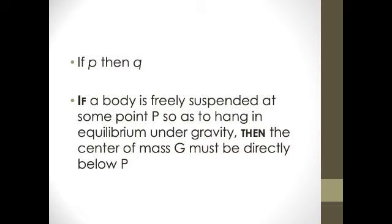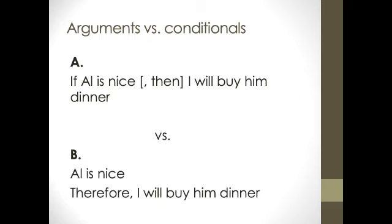So it is a statement, a single statement, even if a complicated one. So the structure of this, if a body is freely suspended at some point P so as to hang in equilibrium under gravity, then this is the second part, the center of mass G must be directly below P. So here we have A and B.